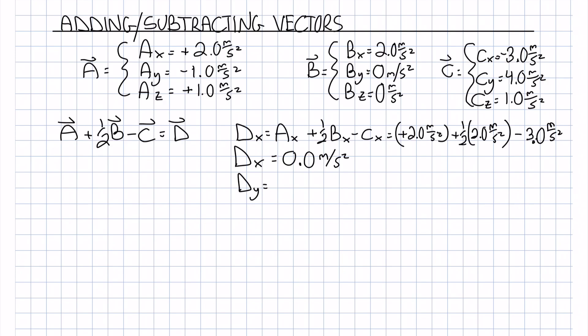...we get that Dy is equal to negative 5.0 meters per second squared, and if you repeat the process, you'll get that Dz is equal to 0.0 meters per second squared. Well, that brings us to the end of this video.